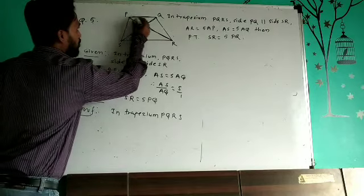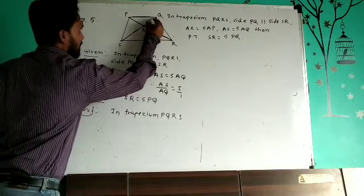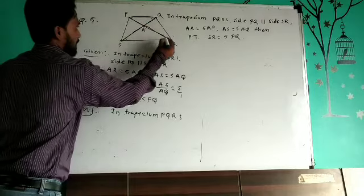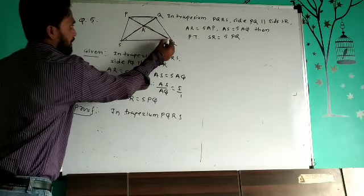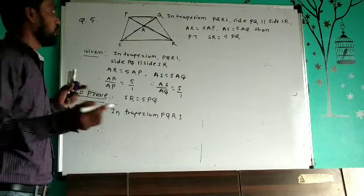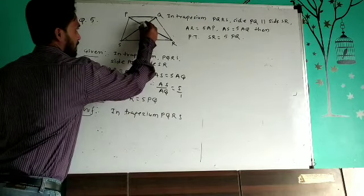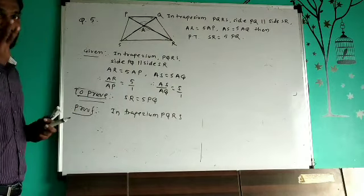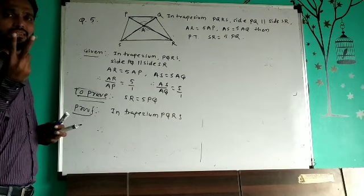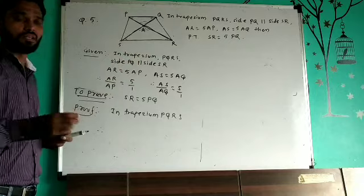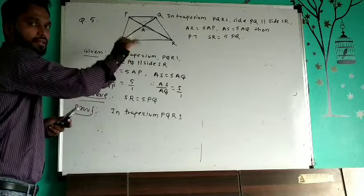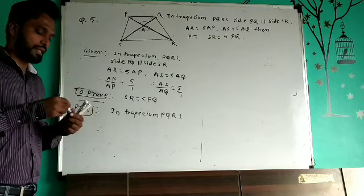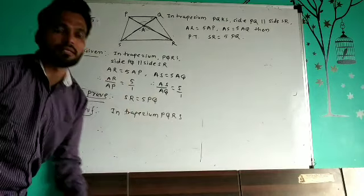Since PQ is parallel to SR, this angle and this angle are the same — alternate angles. This angle and this angle are also the same — again alternate angles. These are two pairs of congruent angles. By the AA test, two triangles are similar.